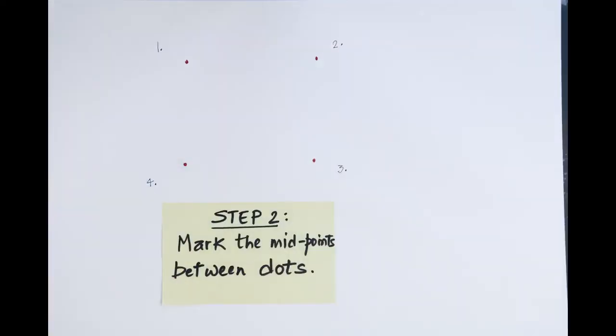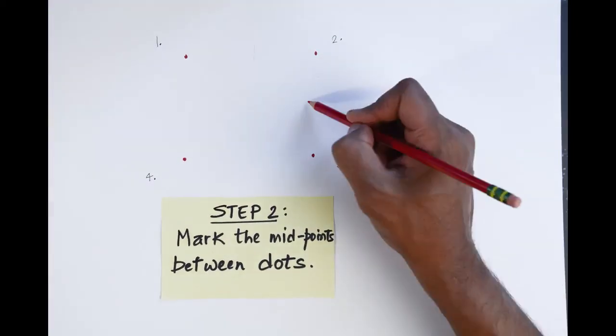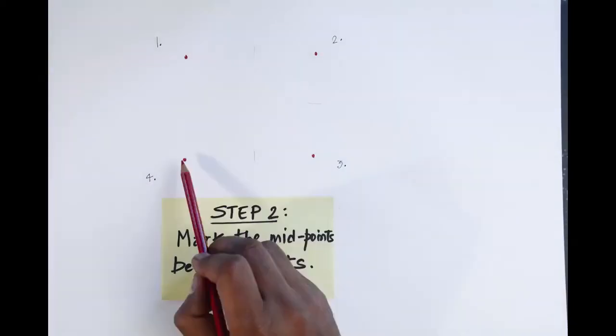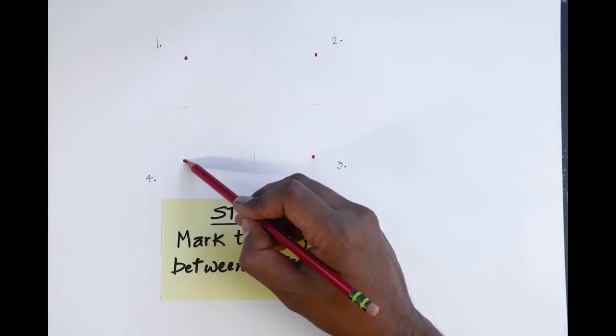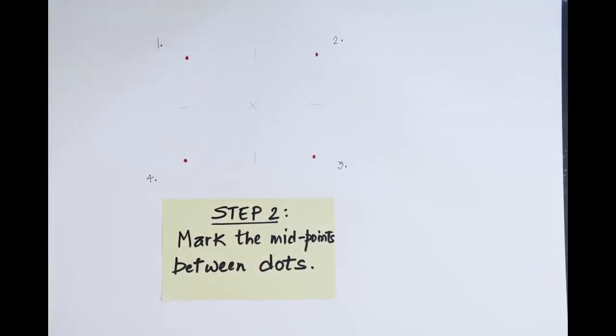Step two, draw short line strokes placed halfway between every pair of dots, which we'll call bisectors. In this example, you have six pairs of dots, so you'll mark six bisectors.